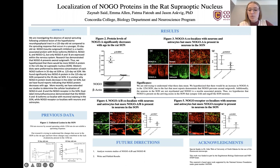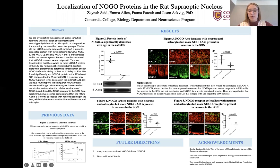One way we are trying to characterize nogo is with dual fluorescence staining. We would take an antibody and stain the nogo protein, and then we would stain the neuron or the astrocyte the opposite color, and then overlay the two pictures and see where that co-localization occurs, which would be the yellow.